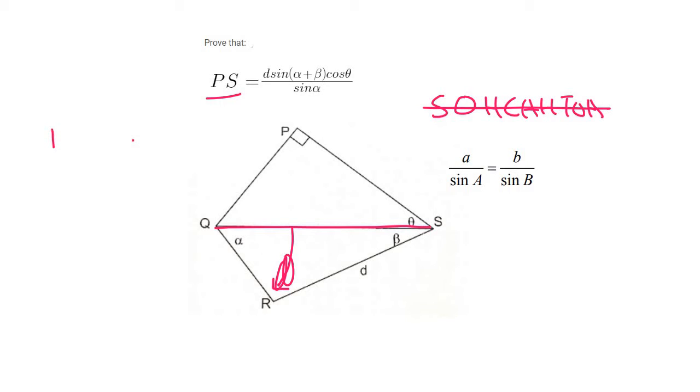So we can say, and we must show this to the examiner, we can say that angle R is going to be equal to 180 minus alpha minus beta. And that's just sum of angles in triangle. So now we have that.